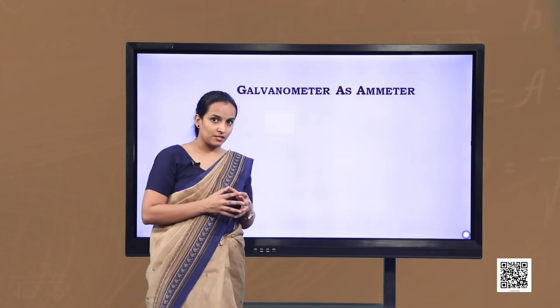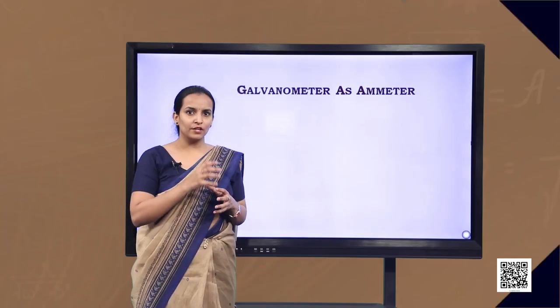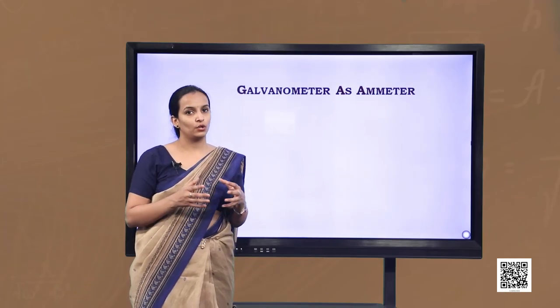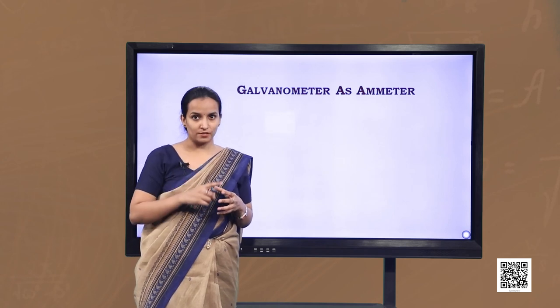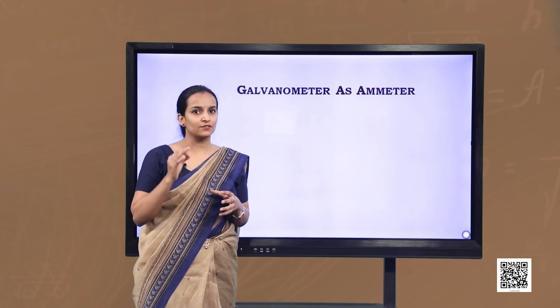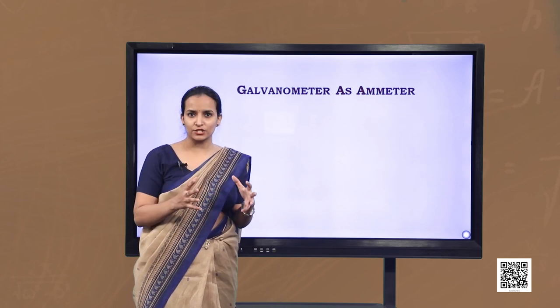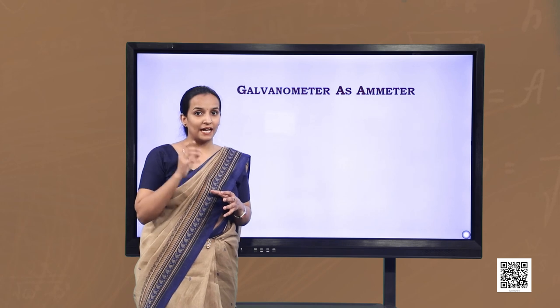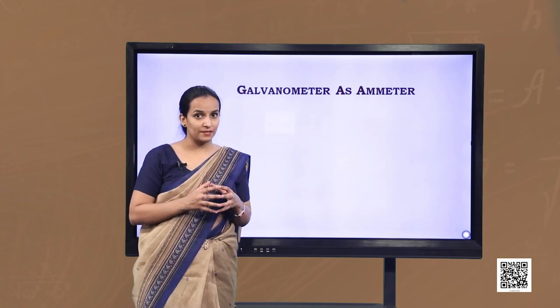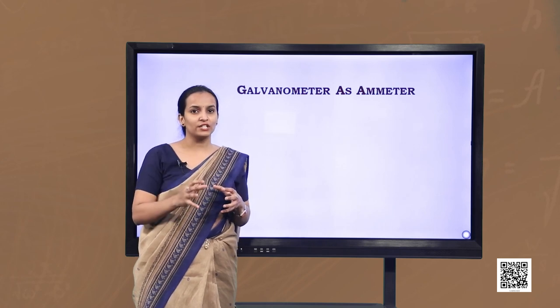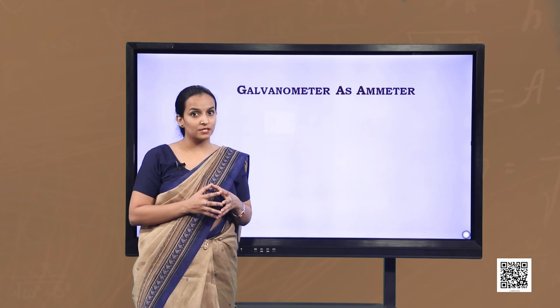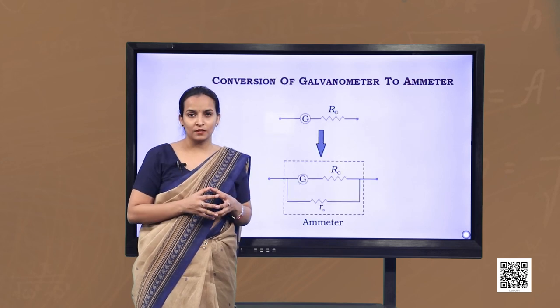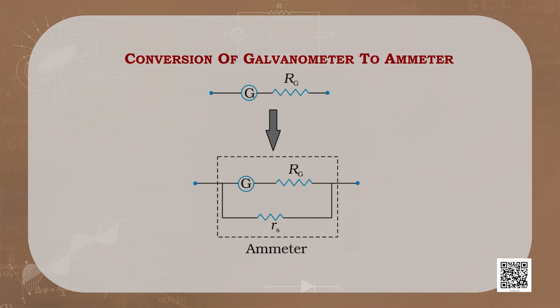Although the galvanometer detects current, it cannot be used directly as an ammeter for two reasons: first, it is very sensitive, giving full-scale deflection for currents of the order of microamperes; second, when connected in series for current measurement, its large resistance changes the value of current in the circuit, giving an inaccurate reading.